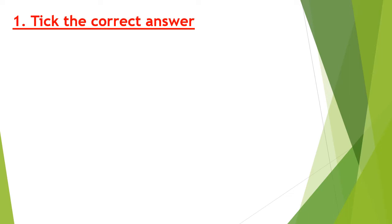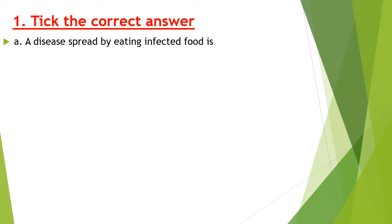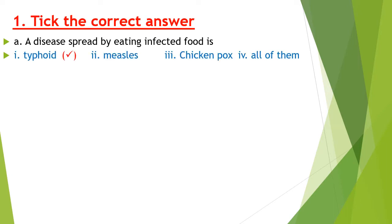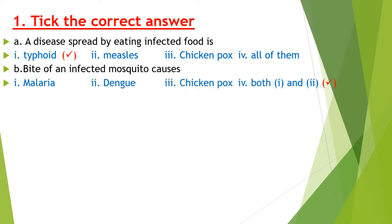Our first exercise is: tick the correct answer. Part A — a disease that is spread by eating infected food is typhoid. Part B — if an infected mosquito bites us, it will cause malaria, dengue, chickenpox, or both one and two. The answer is: the bite of an infected mosquito will cause both malaria and dengue.